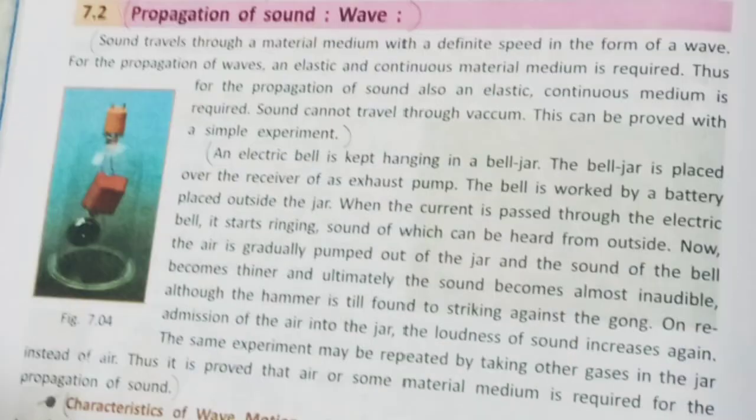Propagation of sound — it is a wave. Unlike light, sound requires a medium such as solid, liquid, or gas for it to propagate or move. Light can travel through a vacuum, but sound cannot. This is the reason why outer space is silent, because outer space is a vacuum and sound cannot travel through vacuum.